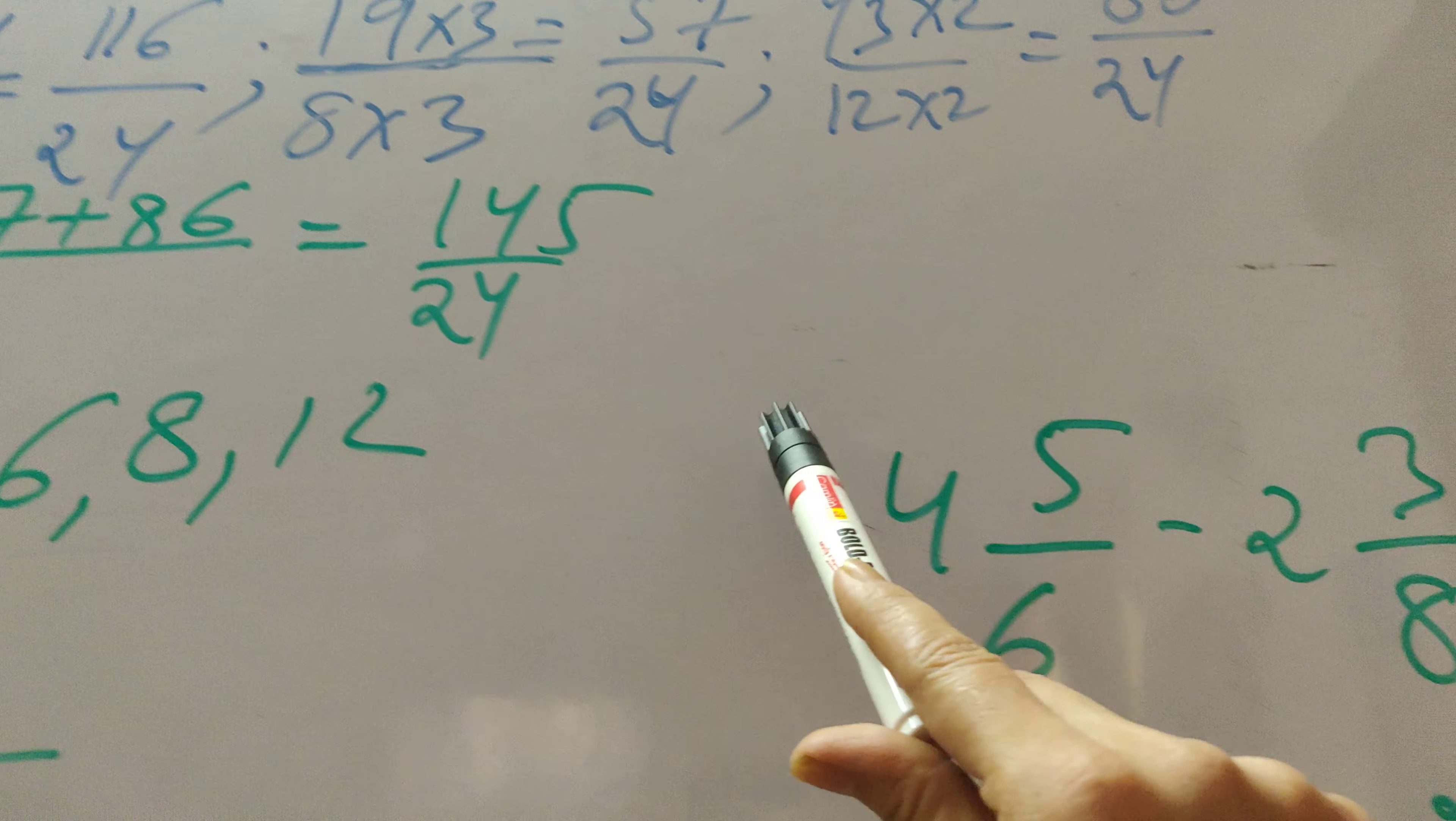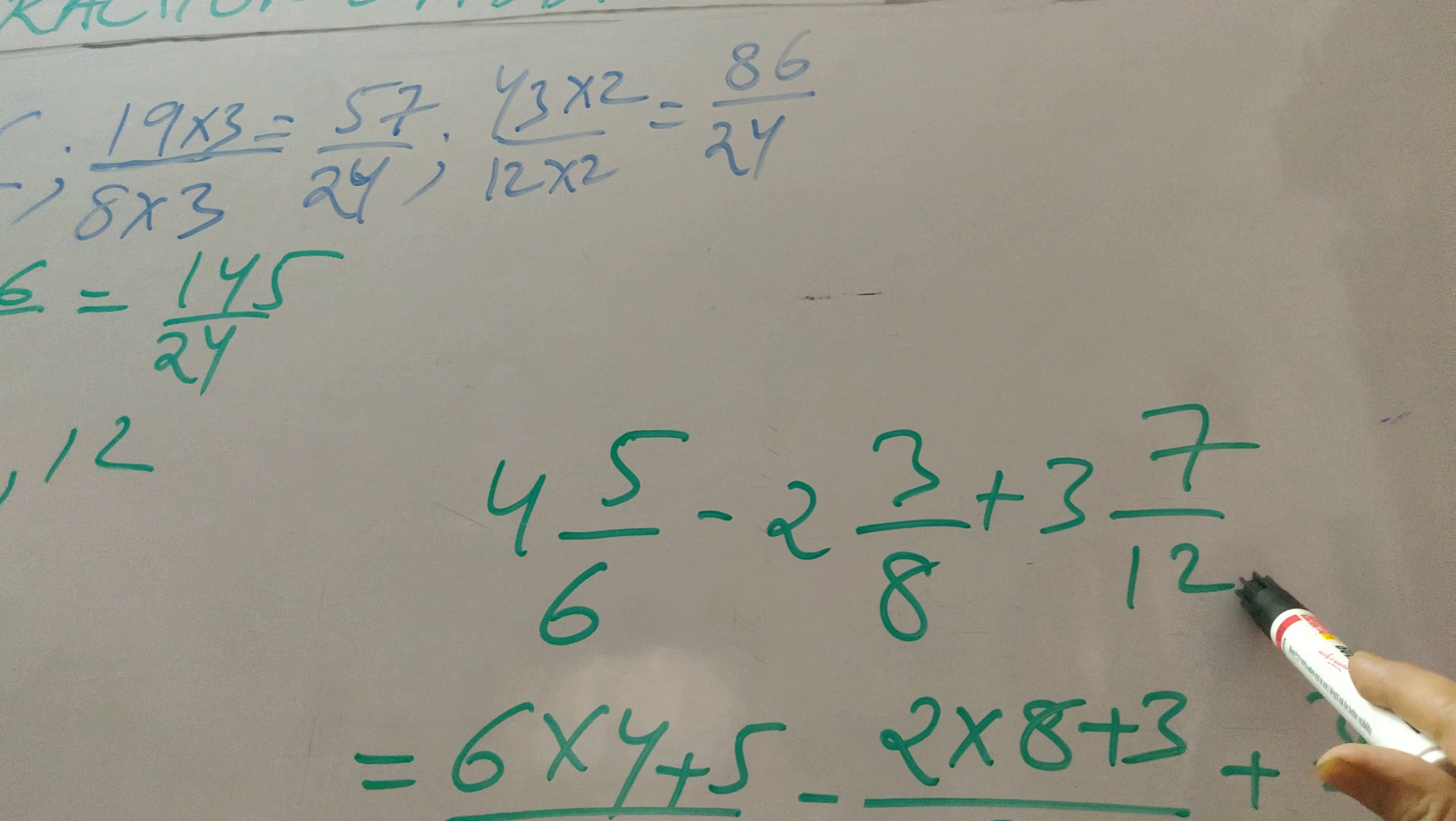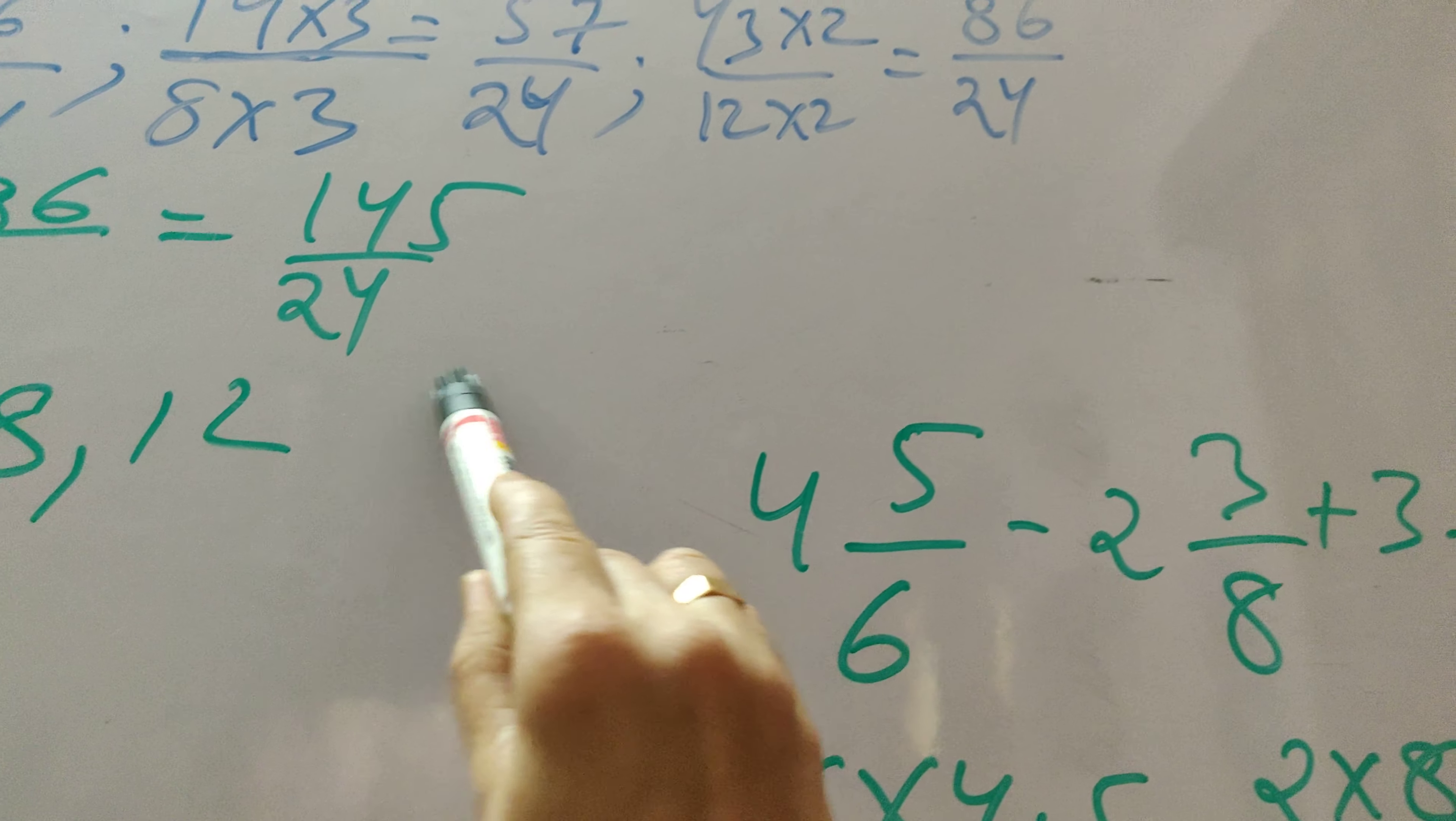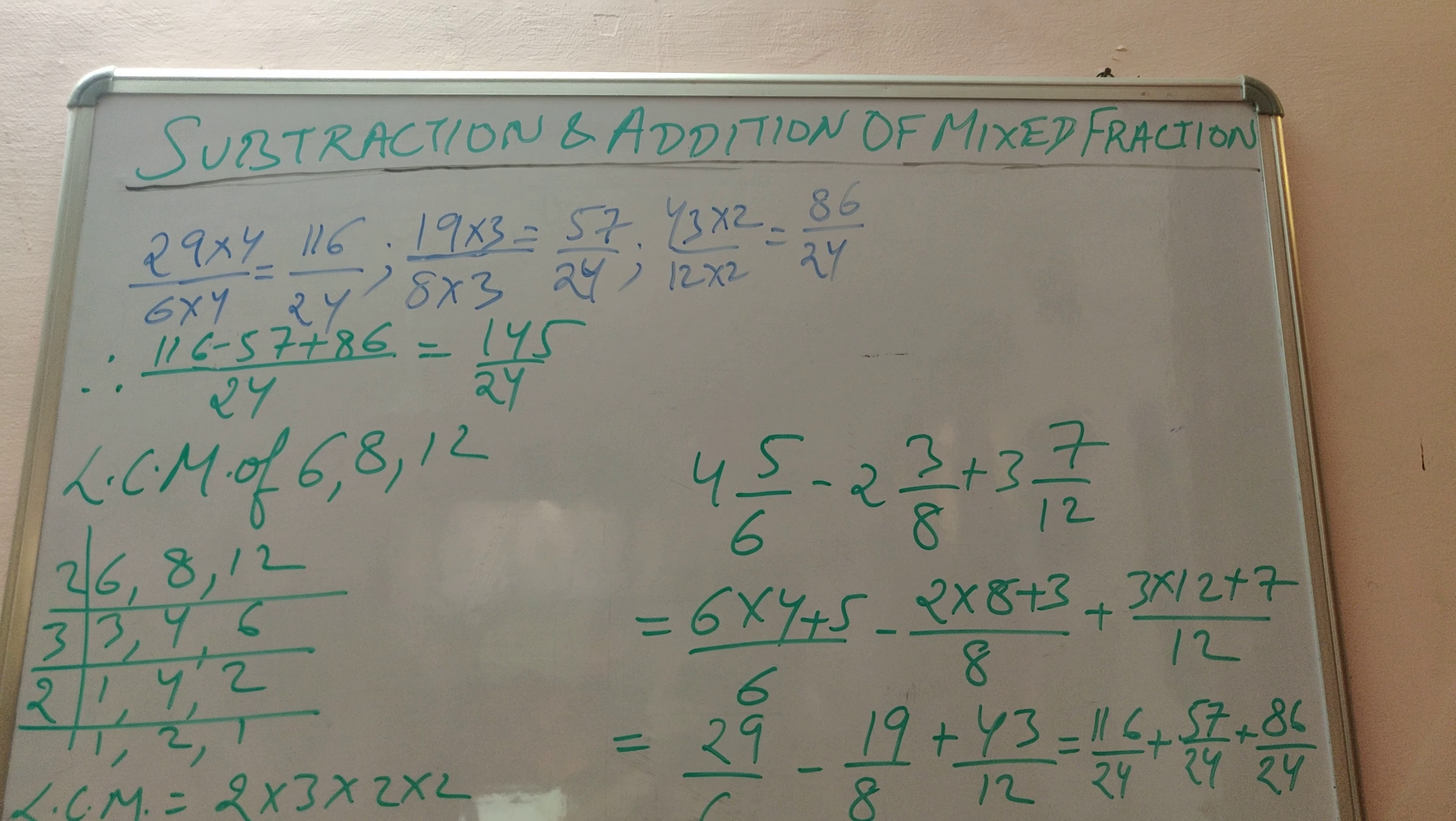So my addition and subtraction of these mixed fractions, that is 4 5/6 minus 2 3/8 plus 3 7/12, is equal to 145/24. So I hope you have understood this subtraction and addition of mixed fractions.